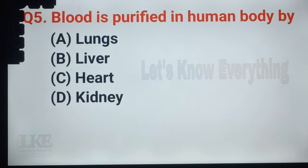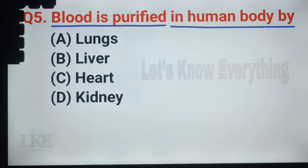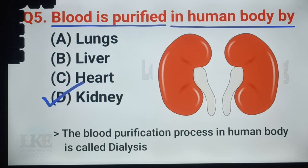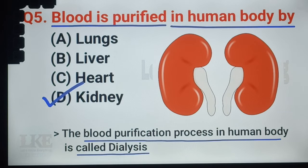Question number 24, it is very important: blood is purified in the human body by the kidneys. The kidney is the main organ responsible for purification of blood. The blood purification process in the human body is called dialysis.